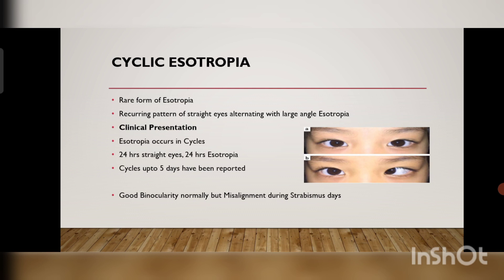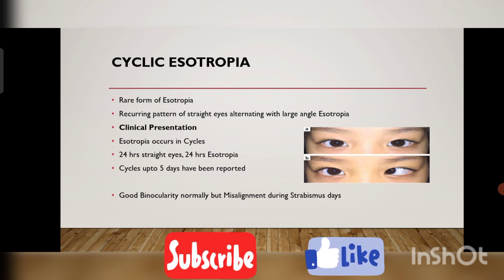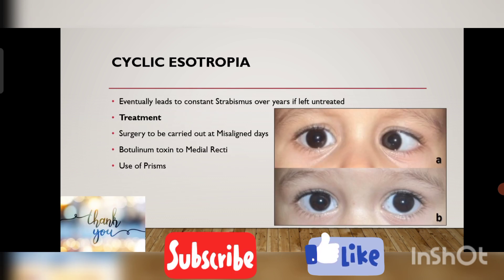Now coming to another very rare type of esotropia called cyclic esotropia. There is a recurring pattern of straight eyes alternating with large-angle esotropia — the child has normal straight eyes for 24 hours, and the next 24 hours the child has a large-angle esotropia. Cycles up to 5 days have been reported. When the child has straight eyes, there is good binocular function, but when the child is esotropic, binocular function is absent and there is misalignment. It eventually leads to constant strabismus over years if left untreated.